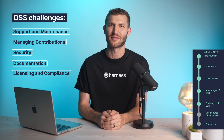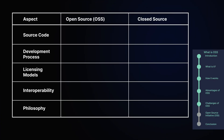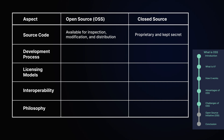OSS and closed-source software represent two different approaches. Open source: the source code is available for anyone to inspect, modify, and distribute. This fosters a collaborative development model and peer review for quality assurance and security. Closed source: the source code is proprietary and kept secret. Users are granted a license to use the software, but cannot modify or redistribute the code.